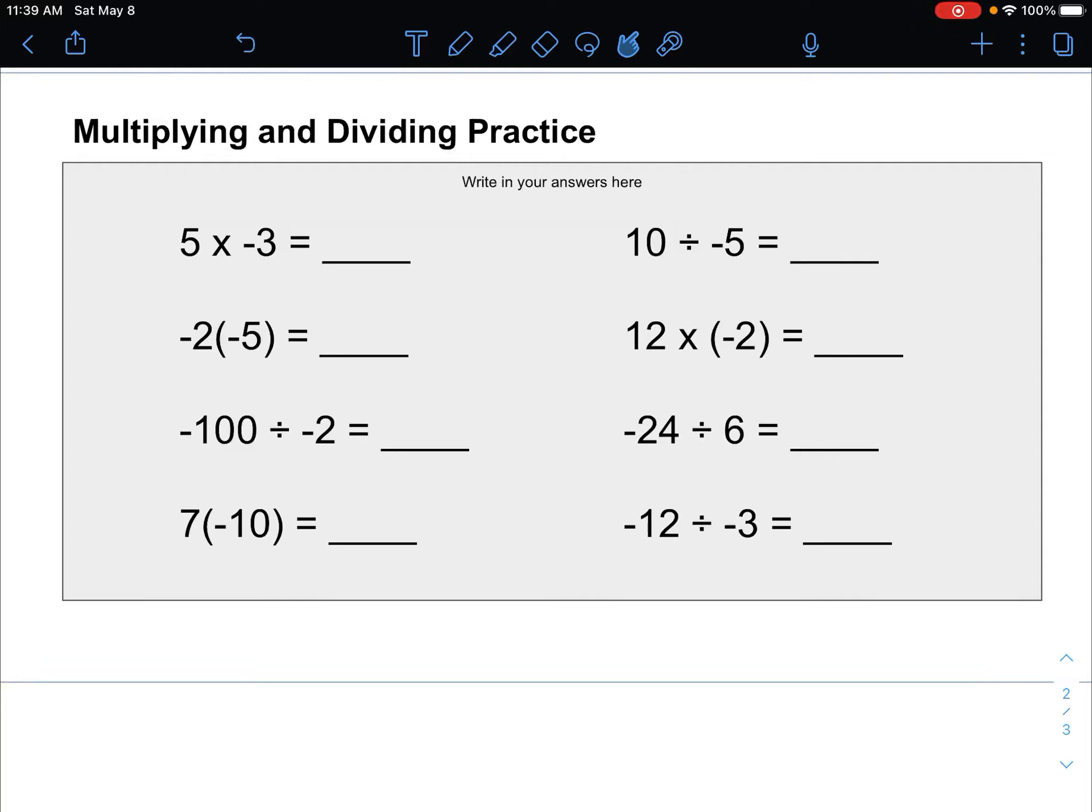For multiplying and dividing with negatives and positives, what we want to do is just do multiplication and division like normal, and then just count the negatives at the end.